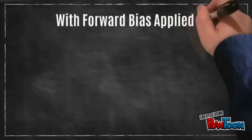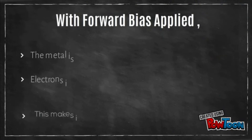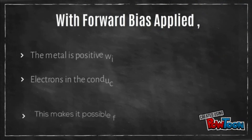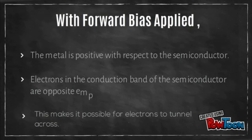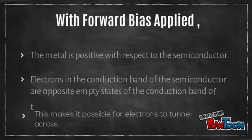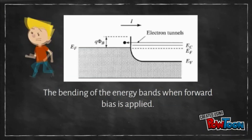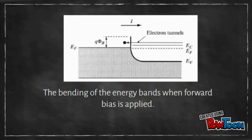When a forward bias is applied, making the metal positive with respect to the semiconductor, electrons in the conduction band of the semiconductor are opposite empty states of the conduction band of the metal, which makes it possible for electrons to tunnel across. The bending of the energy bands when forward bias is applied is shown in this figure.